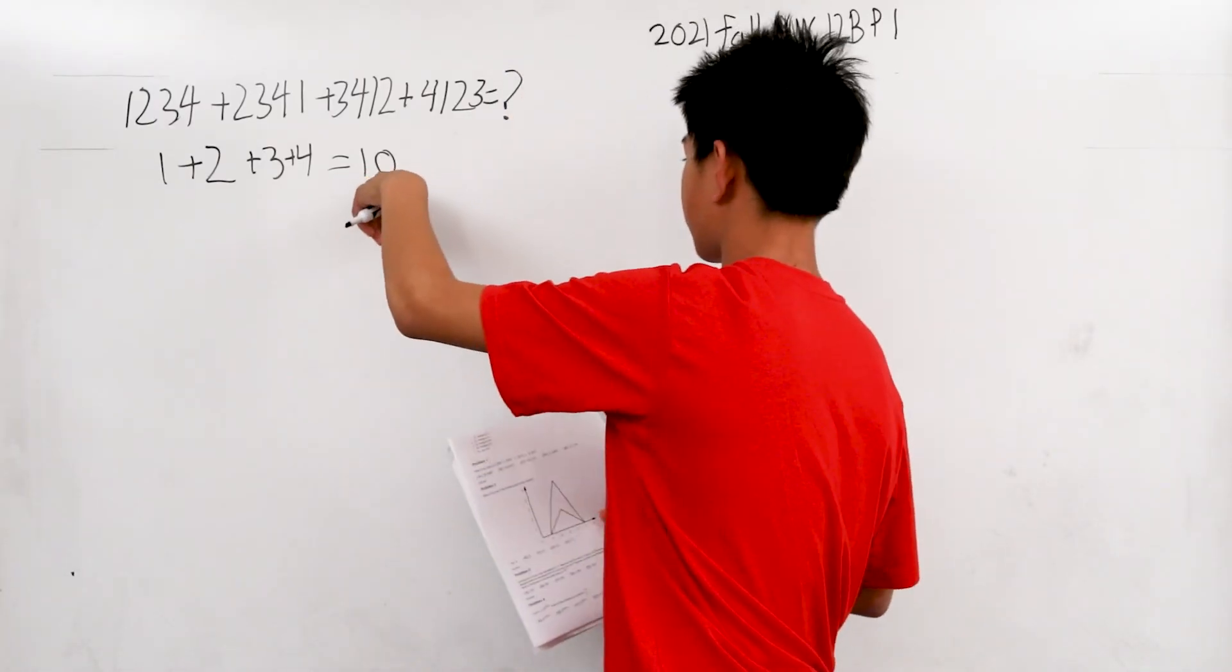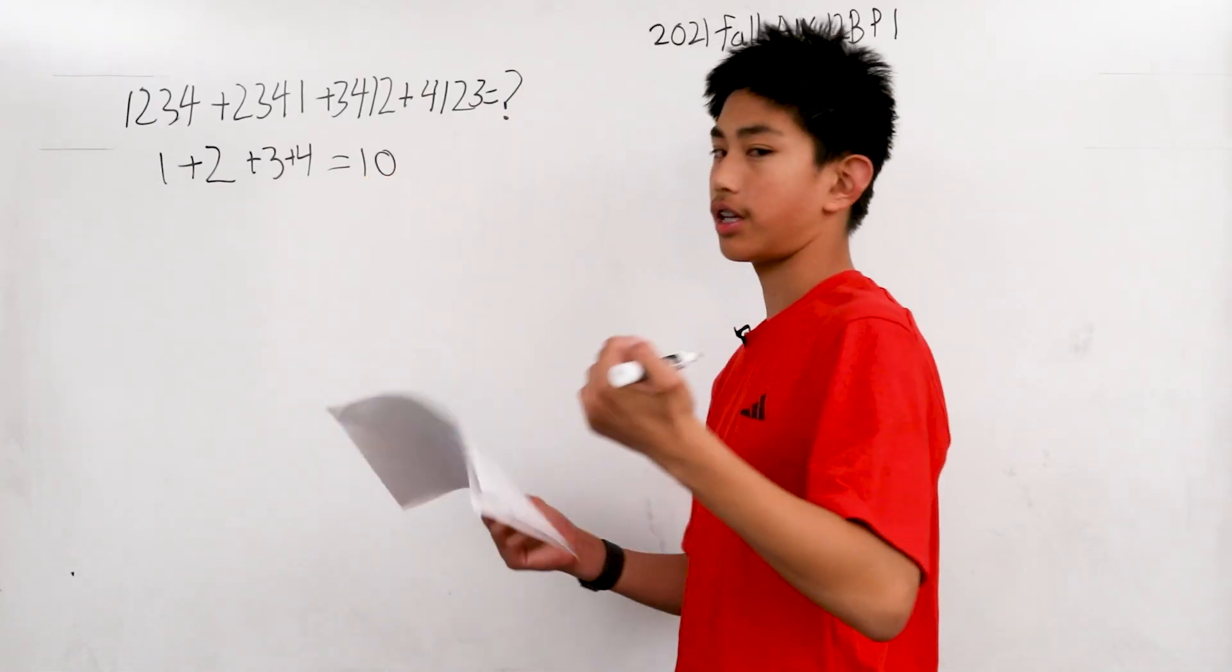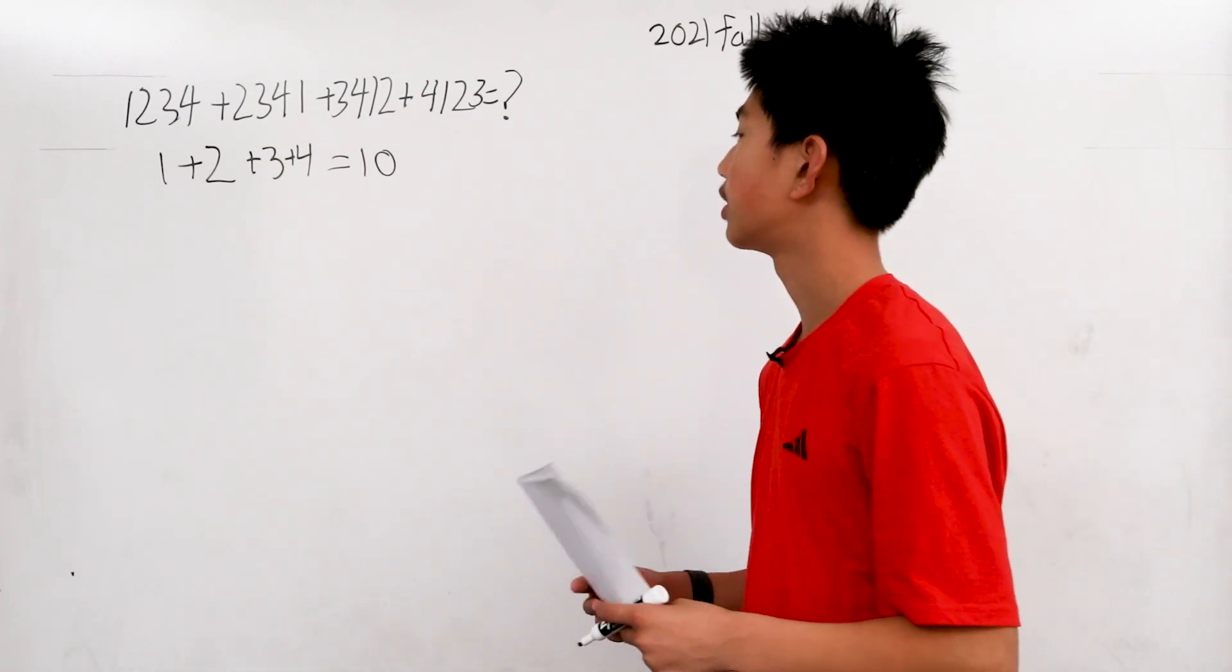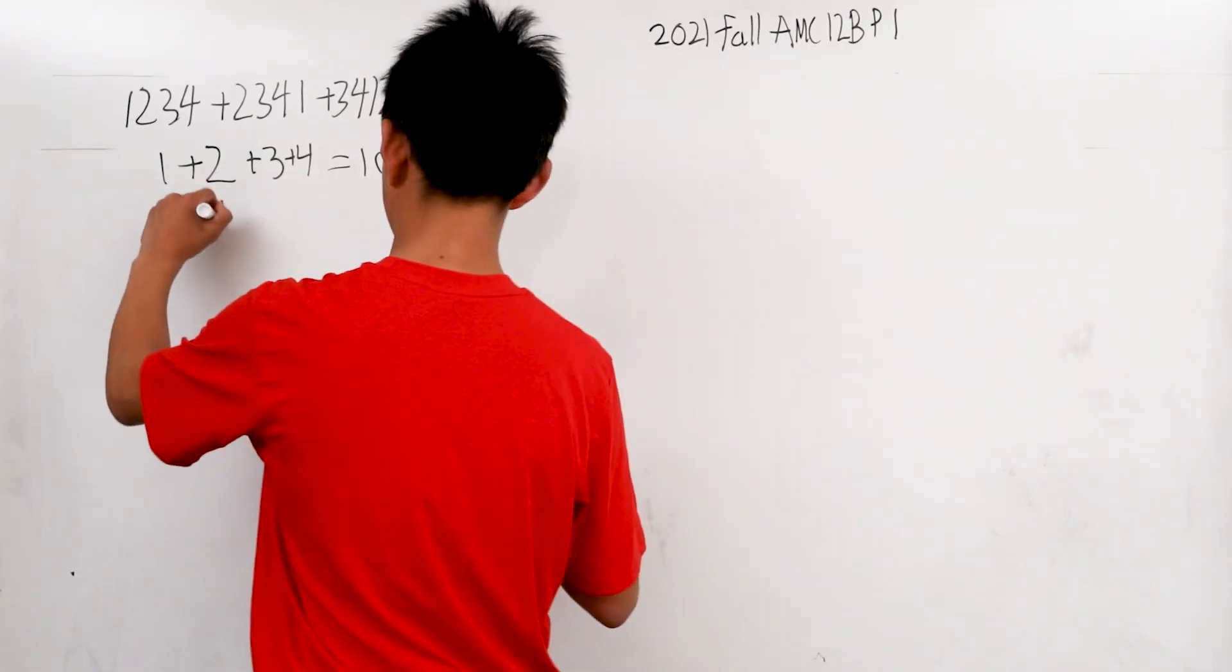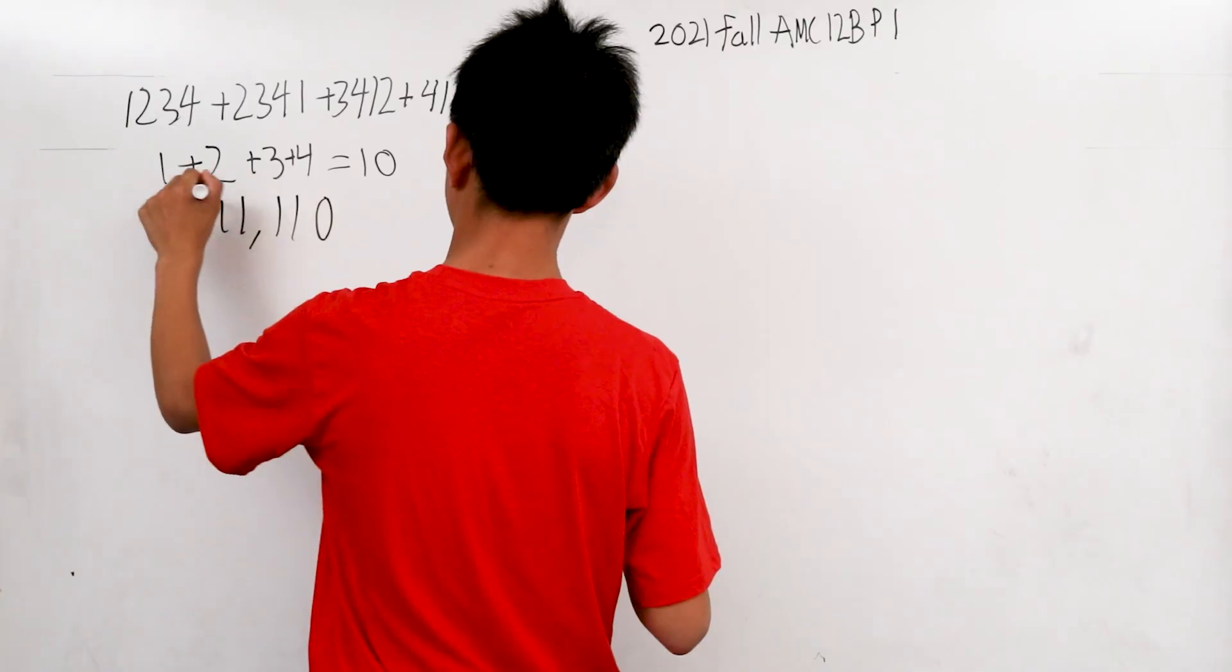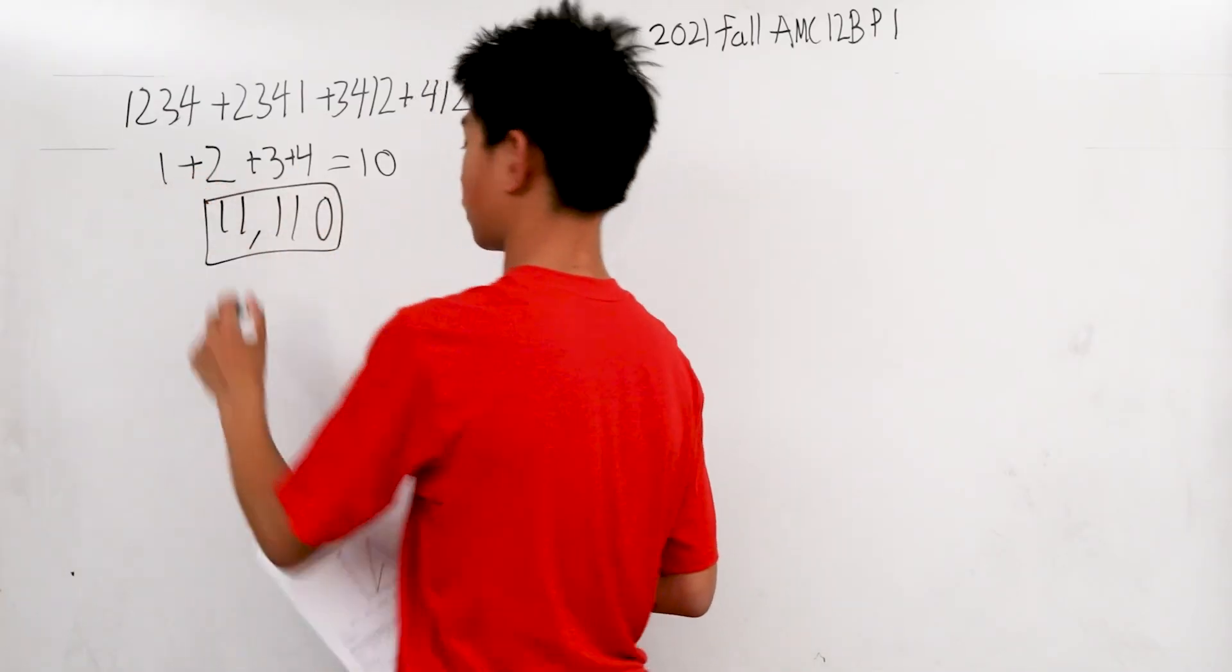But not the ones because there's going to be a zero in the ones. So our answer is eleven thousand and ten, and that's our answer.